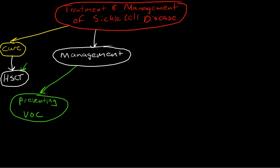The next aspect of treatment and management of sickle cell disease really involves the process of preventing veno-occlusive crises. There are two ways to do that. They both involve decreasing the concentration of either hemoglobin S — which is the sickling form of hemoglobin — through a medication called hydroxyurea, or by decreasing the concentration of defective red blood cells through transfusion.